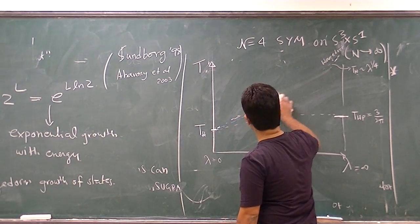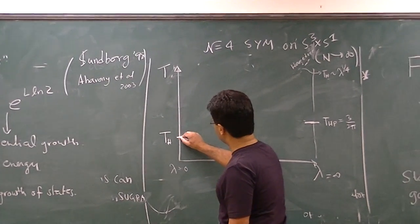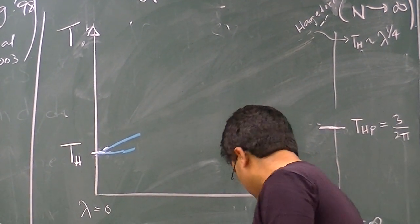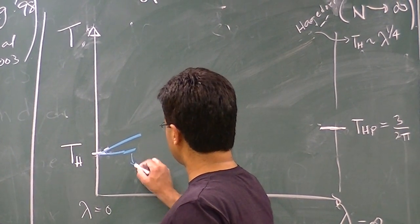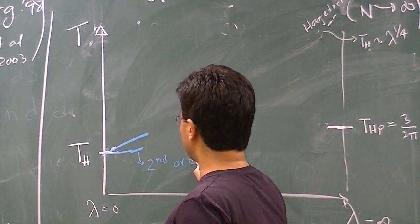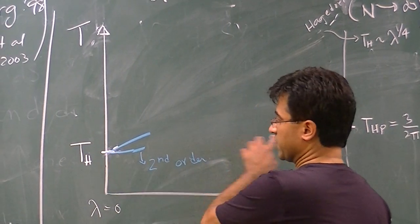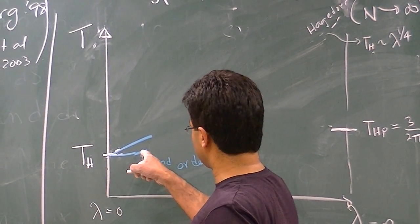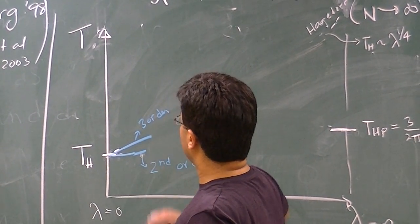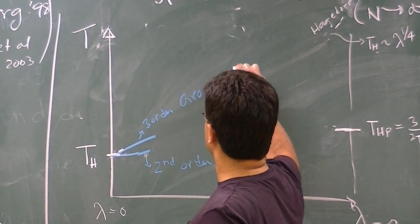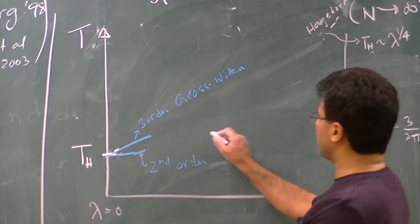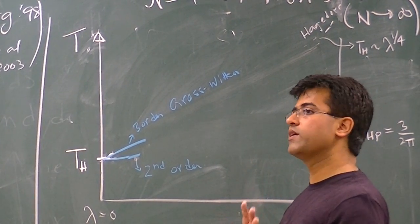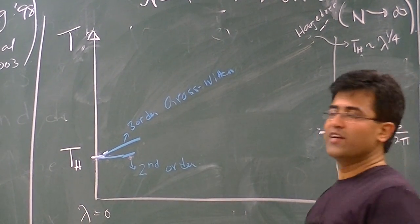So the other possibility is that there is actually this single line splits into two. Those are the two possibilities that we have, and one doesn't know which one happens. And these two lines are interesting because this one is a second order line. These are the only two possibilities, by the way. One possibility is that the first order line just extends. The second possibility is that the first order transition splits into two lines. And this one, the first one, is second order, and this one is third order. And it's a third order Gross-Witten transition. And then something has to happen at some intermediate temperature.